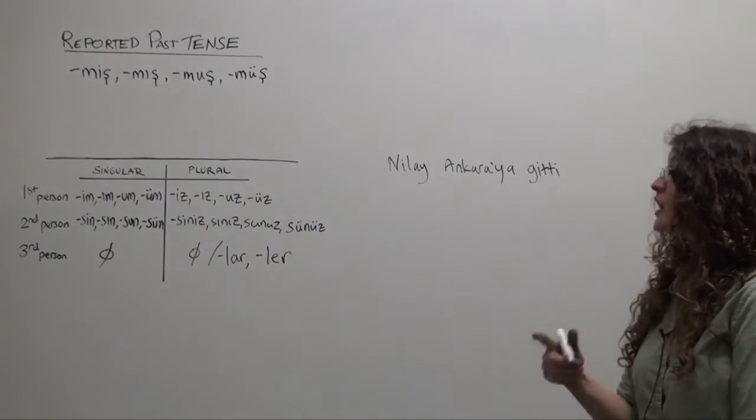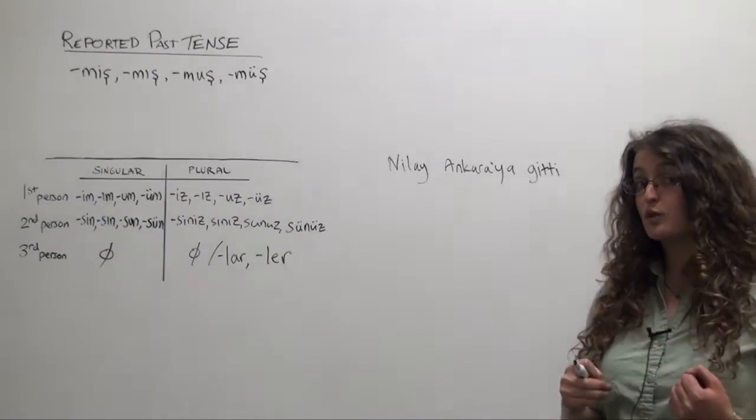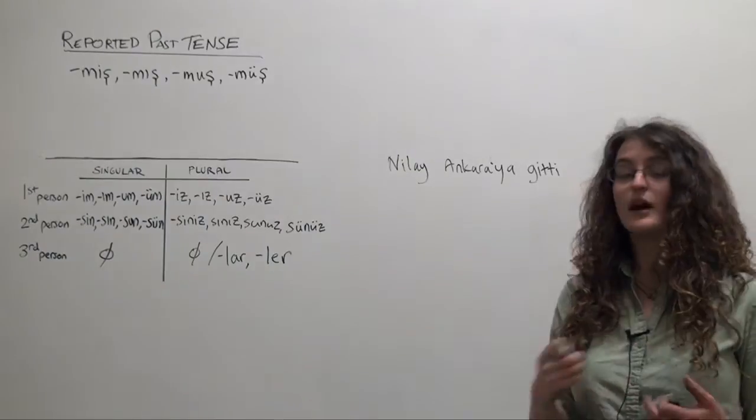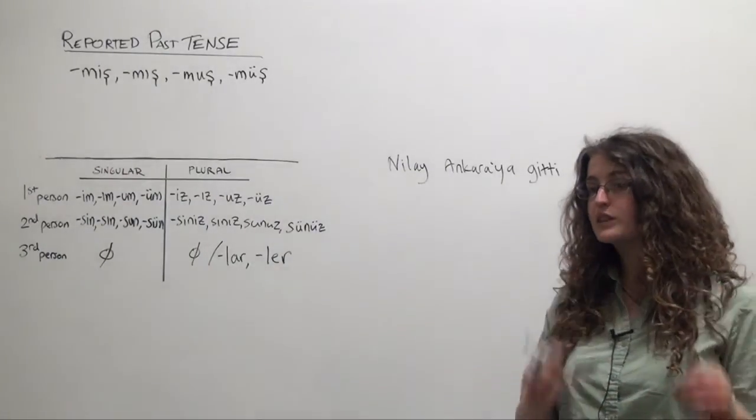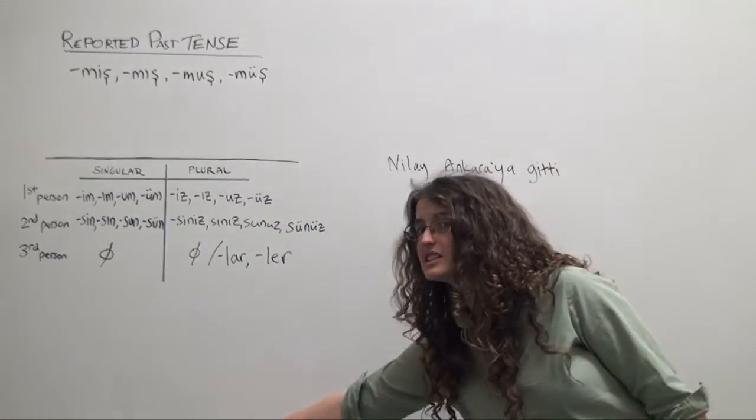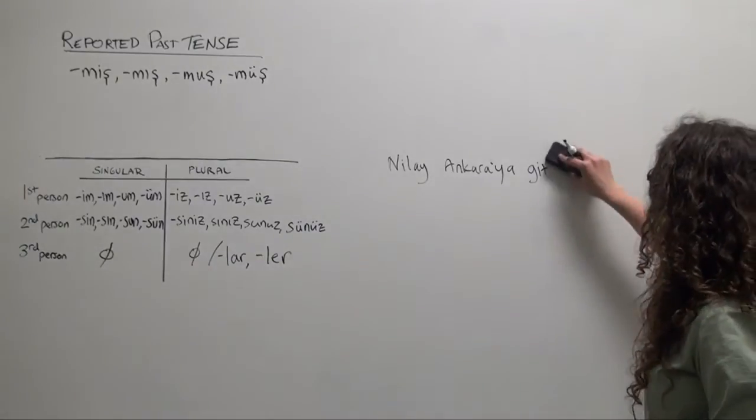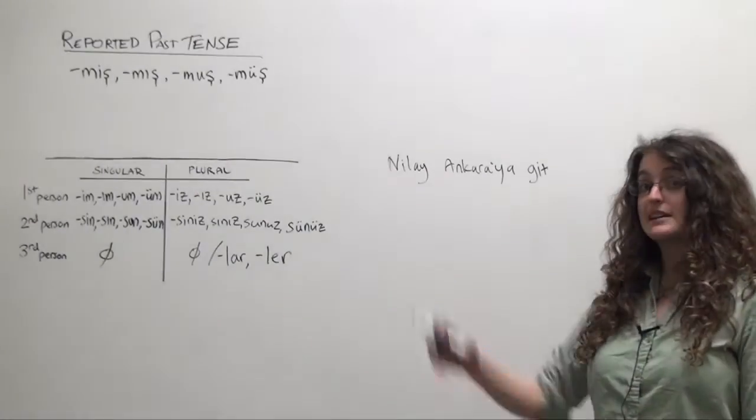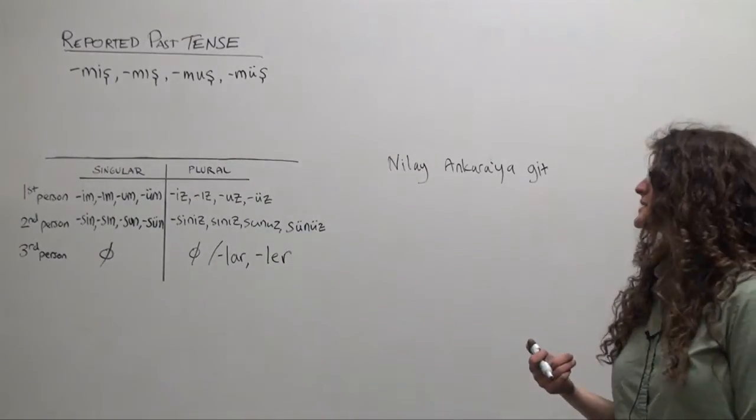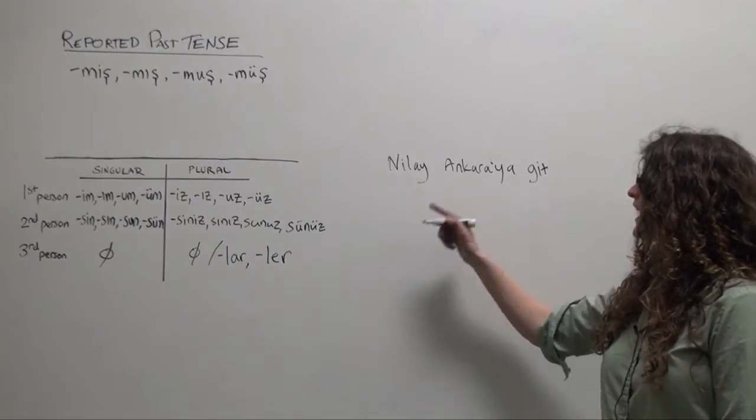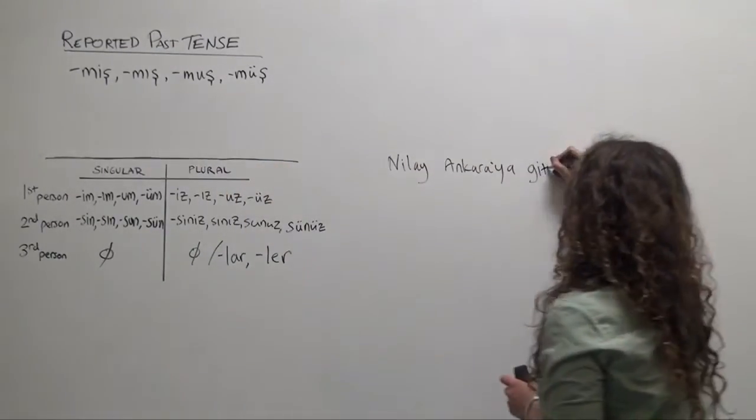But if you've only heard a rumor that Nilay went to Ankara, you haven't spoken with her yourself, you don't really know she went, you just think she did. Then that would be a case where you could use the reported past tense. So Nilay Ankara'ya gitmiş.